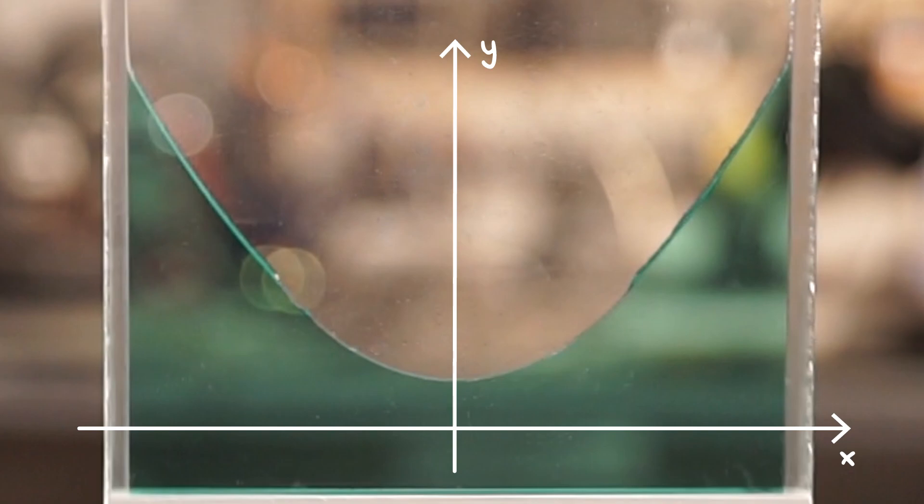Now let's examine what happens to a single water droplet right on the surface. It must be in equilibrium, otherwise it would roll down due to gravity or roll up due to the centrifugal force. Let's examine all the forces acting on this droplet.